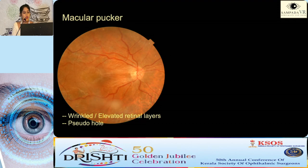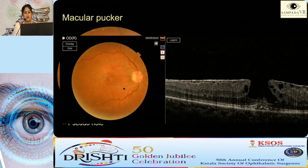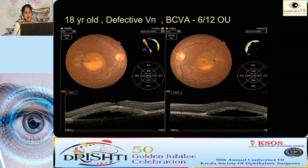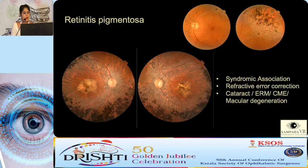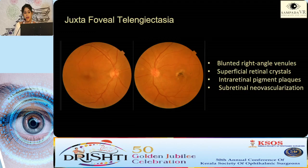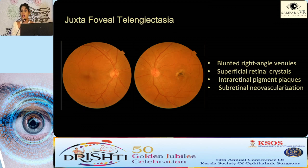Full-thickness macular hole must be correlated with macular pucker or lamellar hole. Lamellar holes can be watched, but full-thickness macular holes should always be referred to a VR surgeon. Stargardt's disease — over time the lesion can rupture and end up with a scar. Retinitis pigmentosa can be sectoral or full-blown; correct refractive error maximally, and look for cataract, ERM, or cystoid macular edema, which can be treated to salvage existing vision.